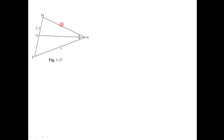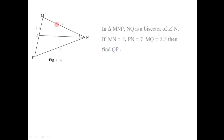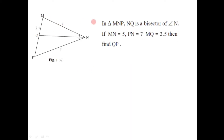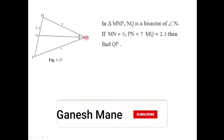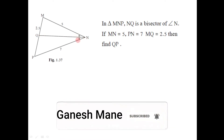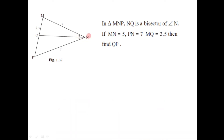The first question is based on this diagram given. Triangle MNP is given where NQ is the angle bisector of angle N. If MN is 5, PN is 7, and MQ is 2.5, then find QP.